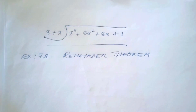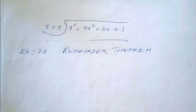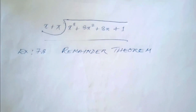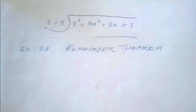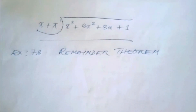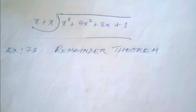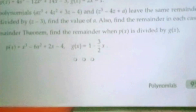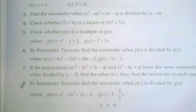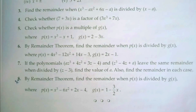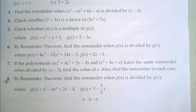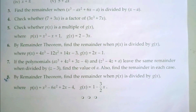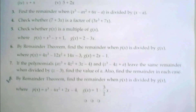Exercise 7.3 Remainder Theorem. Question number 60. By Remainder Theorem, find the remainder when p of x is divided by g of x.